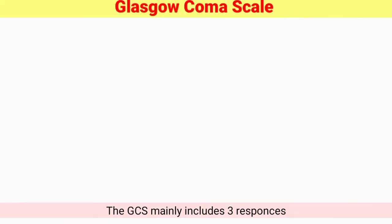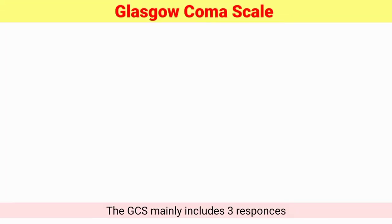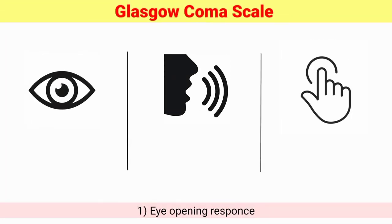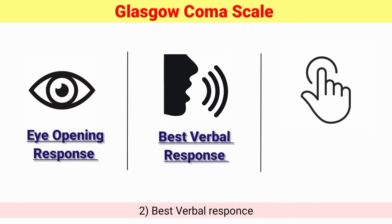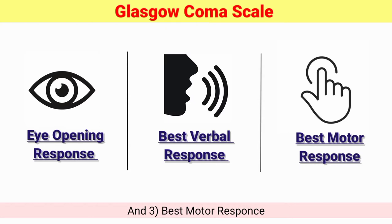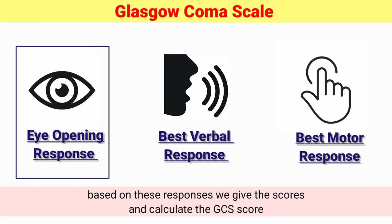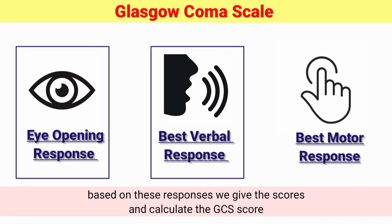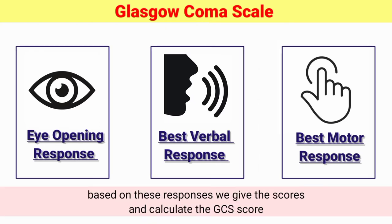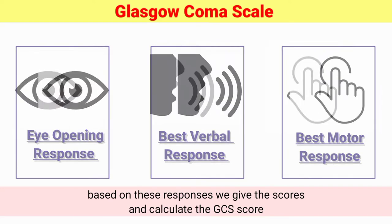The GCS mainly includes three responses: first, eye-opening response; second, best verbal response; and third, best motor response. Based on these responses, we give the scores and calculate the GCS score.